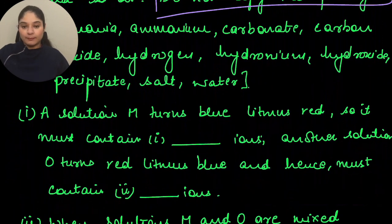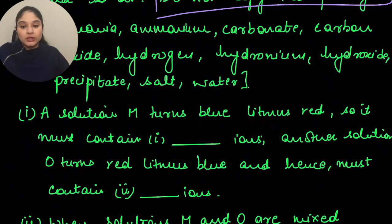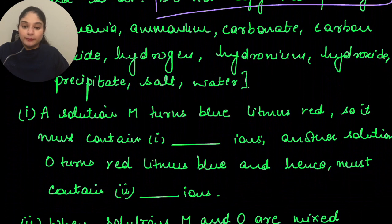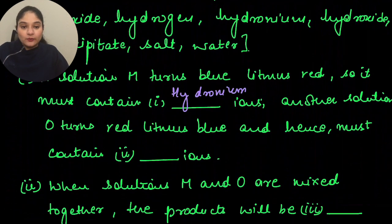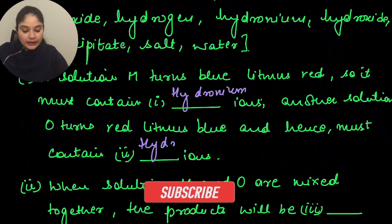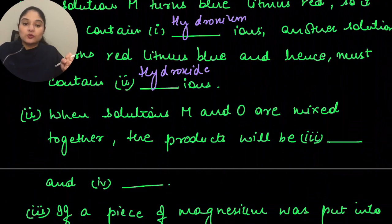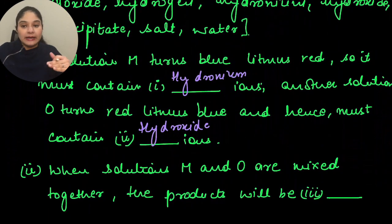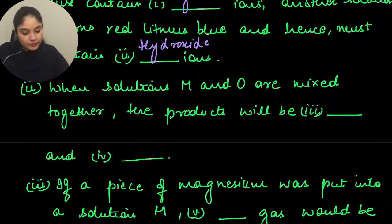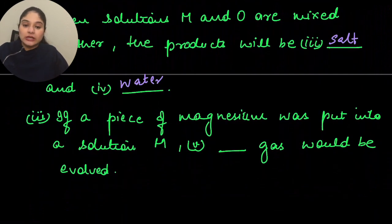Solution M turns blue litmus red, so it must contain hydronium ions. Solution O turns red litmus blue, so it must contain hydroxide ions. When solutions M and O are mixed together, the products are salt and water. If a piece of magnesium is put into solution M, hydrogen gas would be evolved.